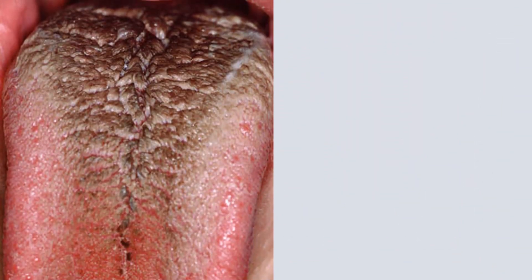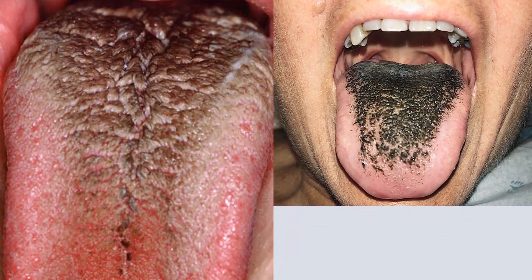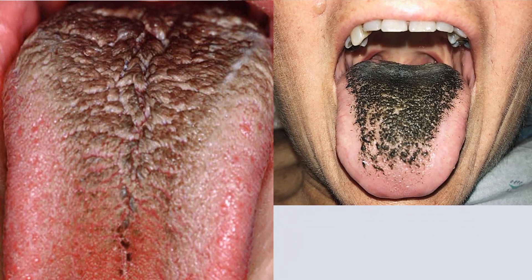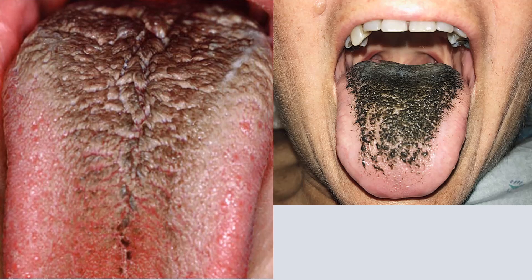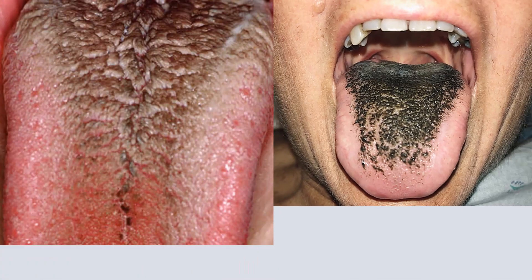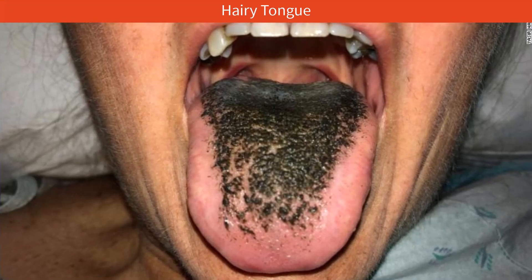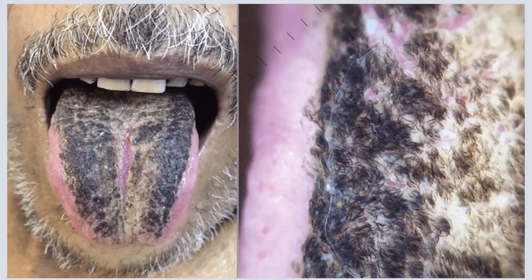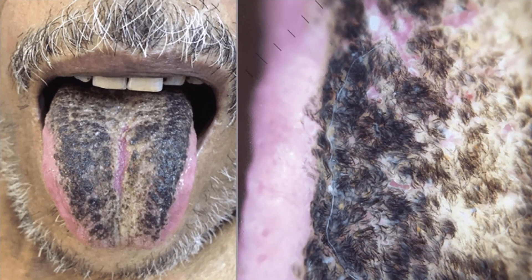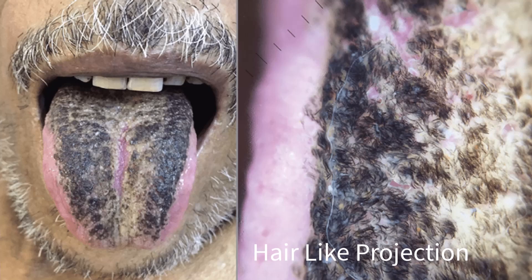Hello people. You might have heard or seen about this condition called hairy tongue and you might have some curiosity about this, which is why you are here now. So let's talk about it. Hairy tongue is the common name given to a condition that causes your tongue to look hairy. Even though the name and the appearance may make you think that hair is growing on your tongue, this condition has nothing to do with actual hair growth.